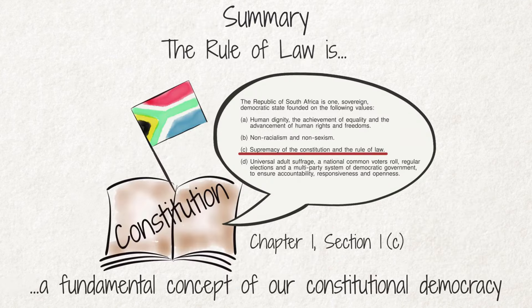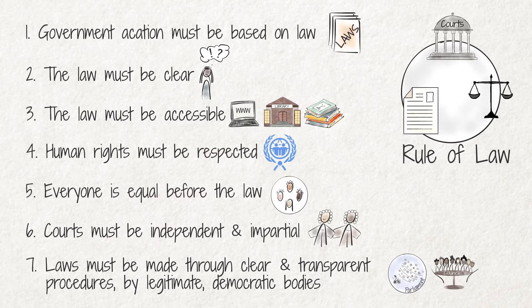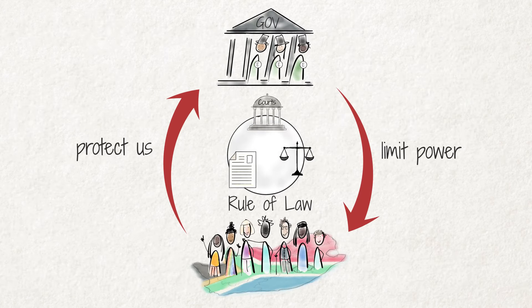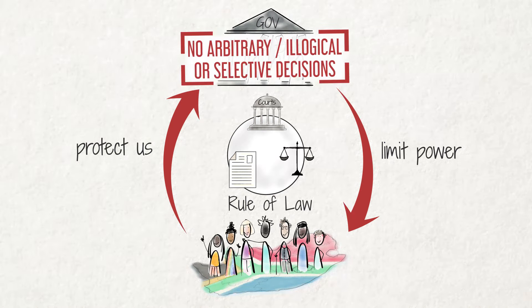Summary: The rule of law is a fundamental concept of our constitutional democracy. It means that government action must be based on law. The law must be clear. The law must be accessible. Human rights must be respected. Everyone is equal before the law. Courts must be independent and impartial. All of these principles are important because they limit the power of the government and they protect us against politicians and officials taking arbitrary, illogical or selective decisions.